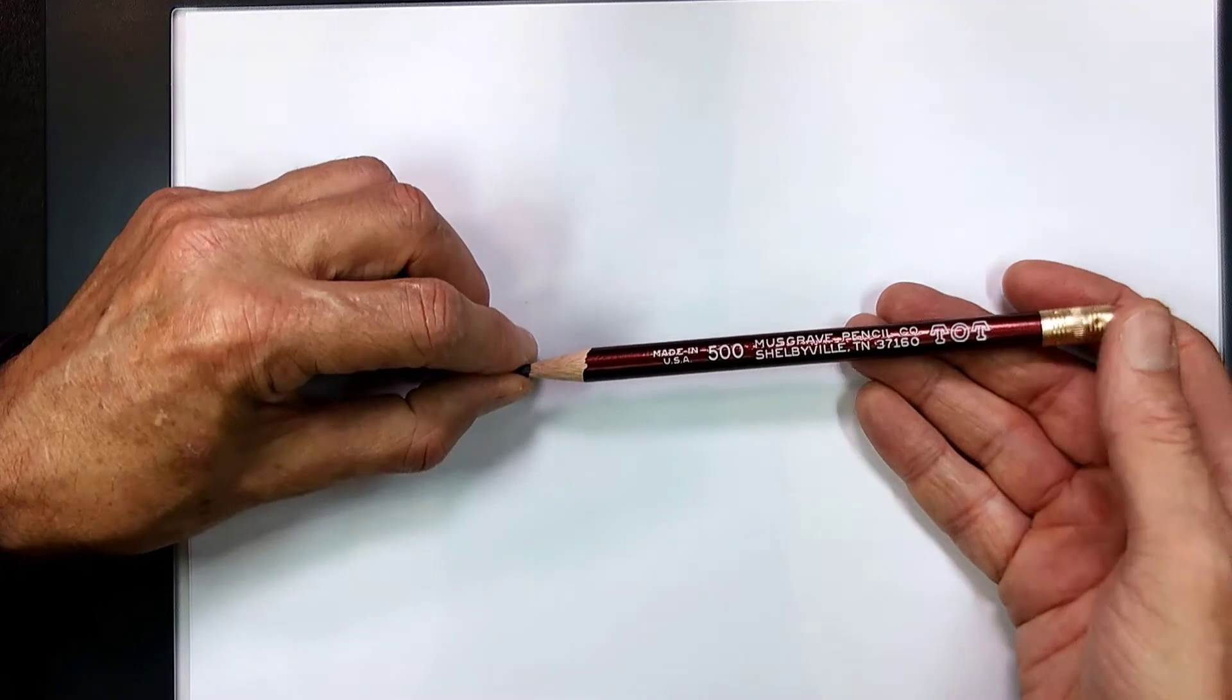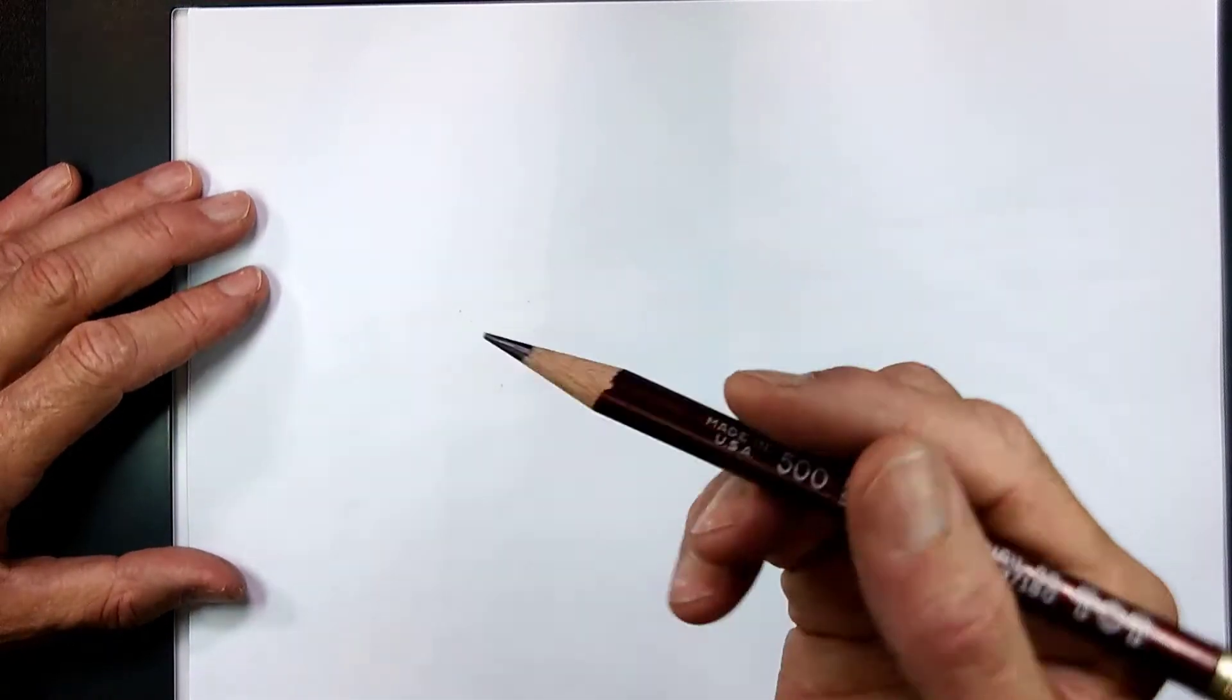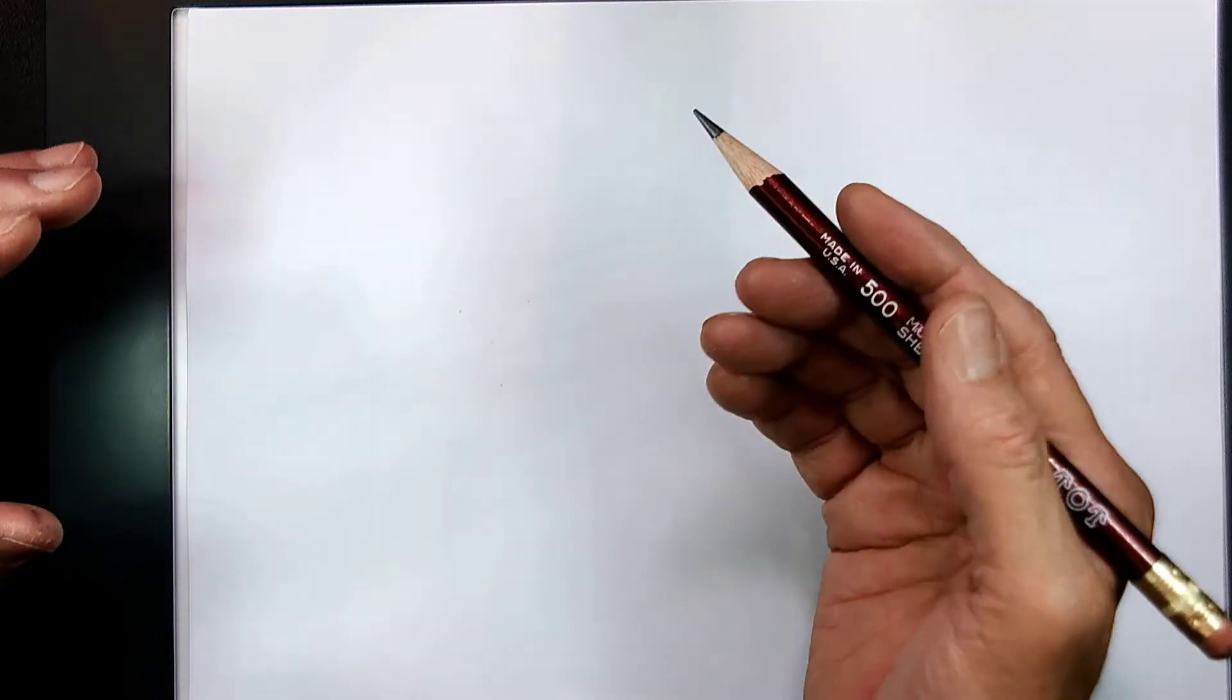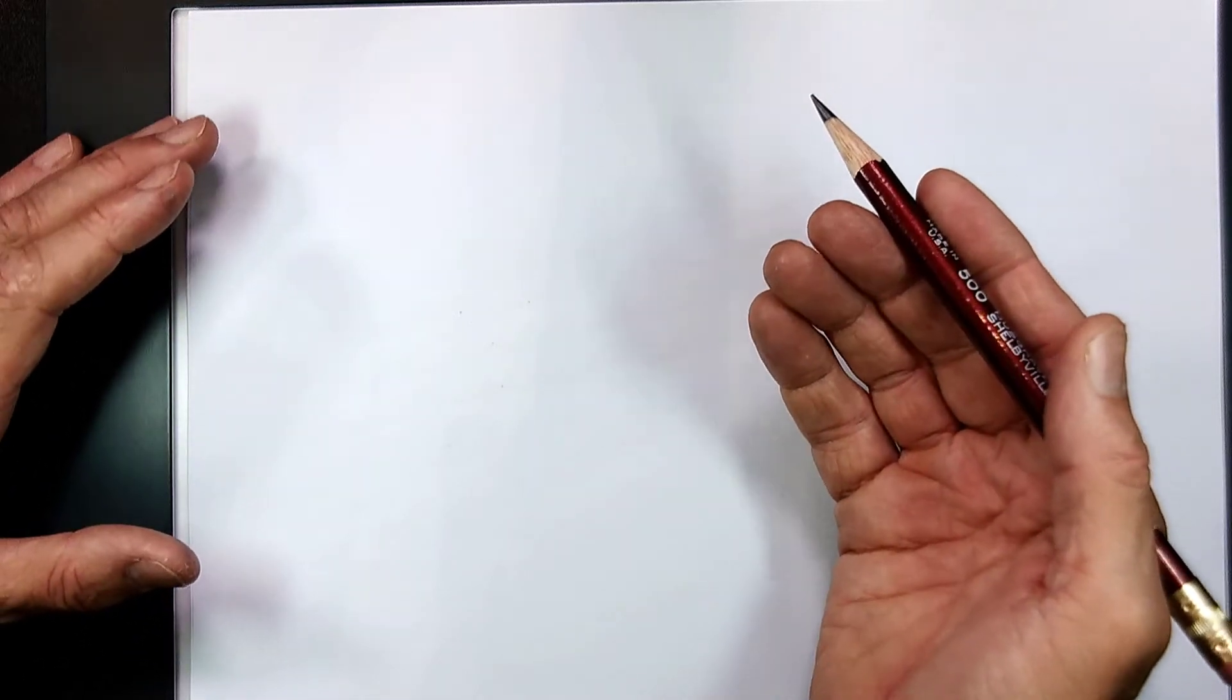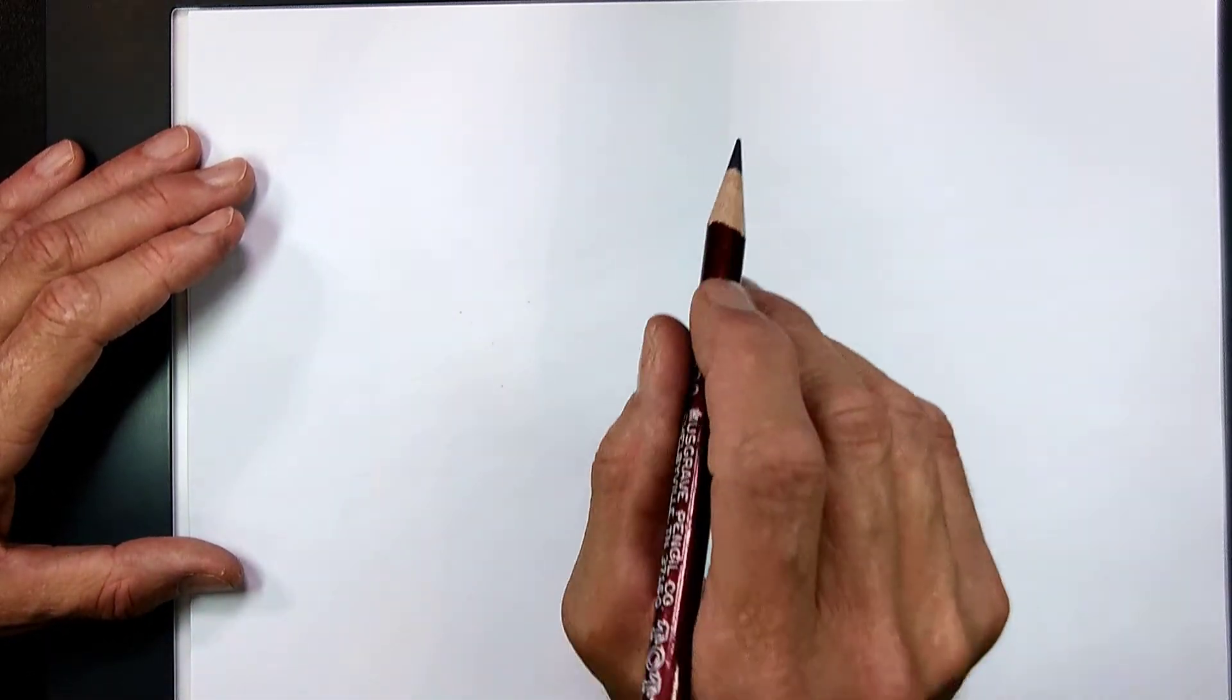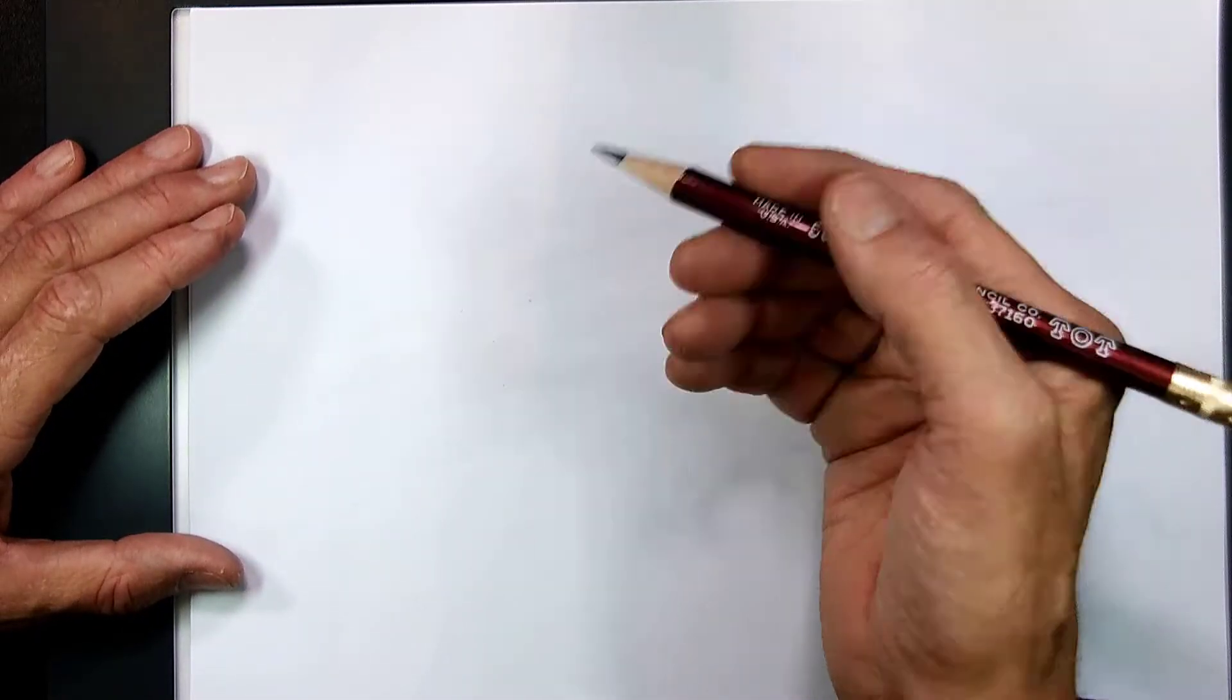The next thing to do is to hold the pencil correctly. Hold it in a way that will allow you to visually express your ideas. And that way, in my opinion, is like a dart. You see, this is like a dart. You throw a dart like this, hold the pencil like this, hold it loosely.